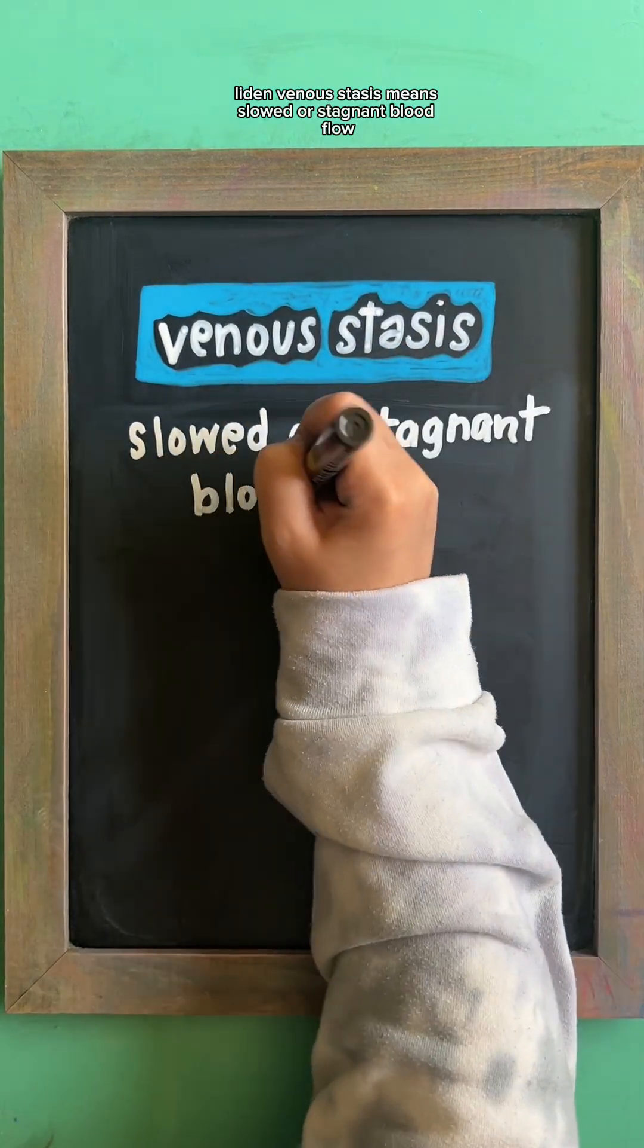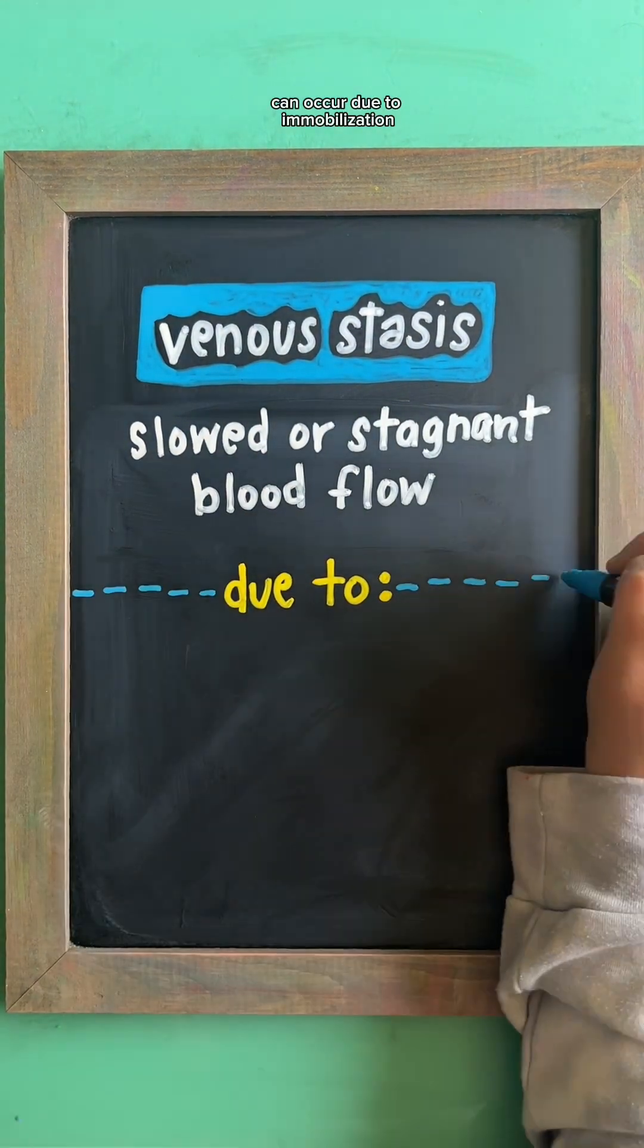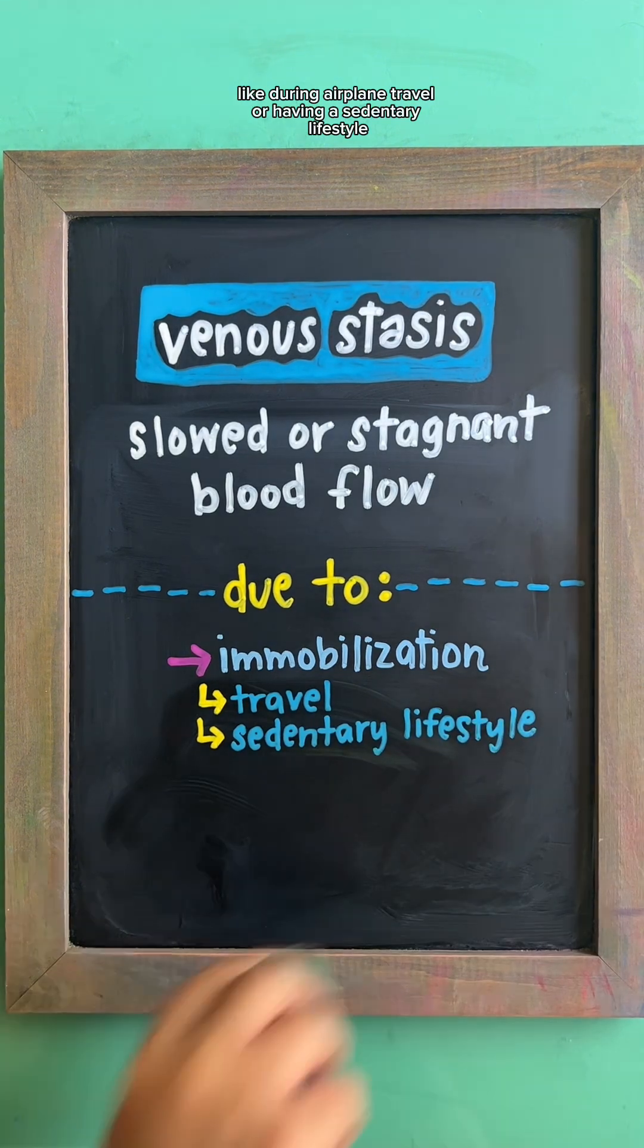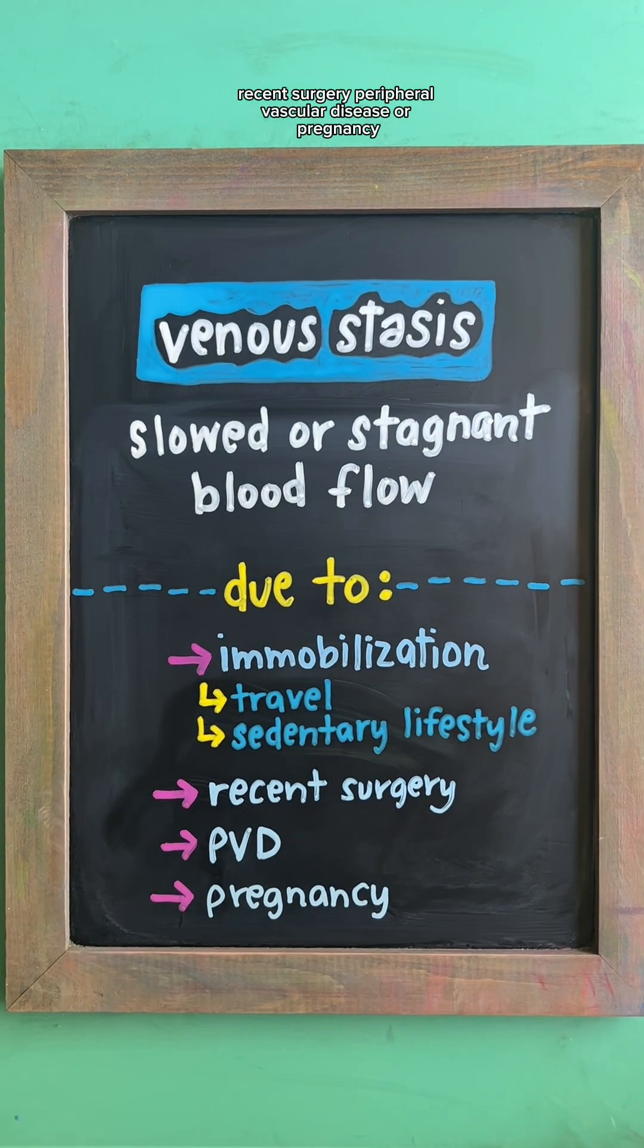Venostasis means slowed or stagnant blood flow. This can occur due to immobilization, like during airplane travel or having a sedentary lifestyle, recent surgery, peripheral vascular disease, or pregnancy.